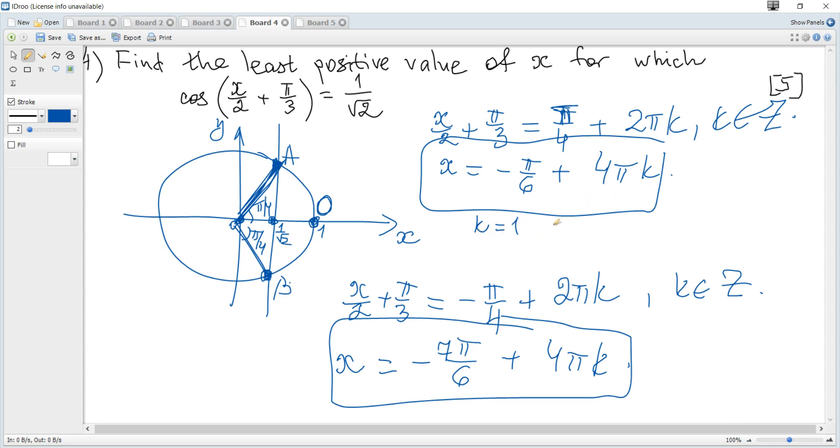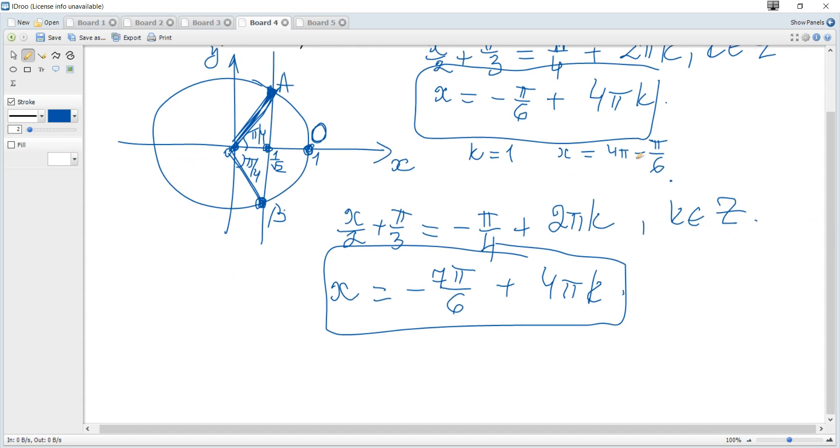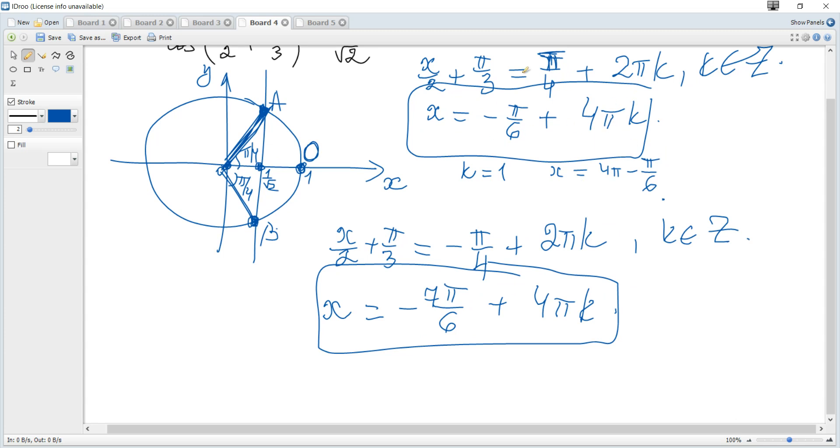For k equals 1, we get x is 4π minus π/6. It's the first positive value for this part of solution. But for the other part, again when k is 0 it's negative, and when k is 1, the particular solution is 4π minus 7π/6.